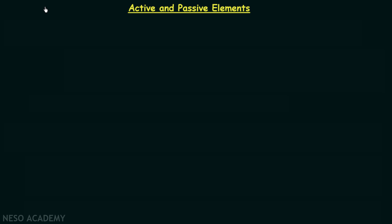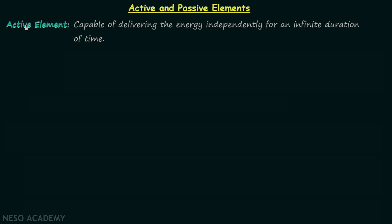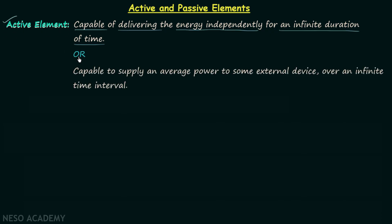We are going to have a discussion on active and passive elements, beginning with active element. An element which is capable of delivering energy independently for an infinite duration of time is known as an active element. We can also define it as an element which is capable of supplying an average power not equal to zero to some external device over an infinite time interval.